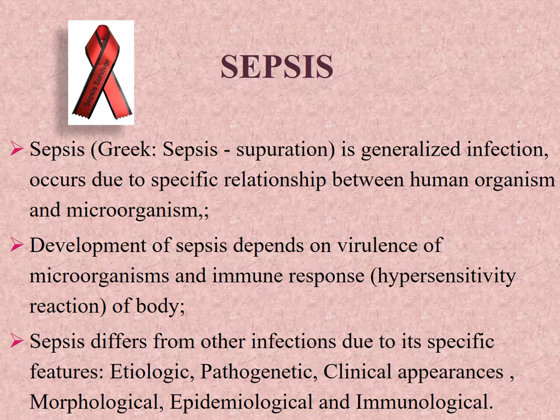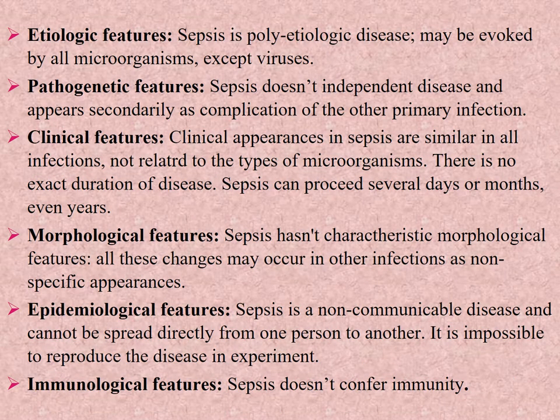Sepsis differs from other infections due to its specific features. Etiological features: sepsis is a polyetiological disease and may be evoked by all microorganisms except viruses. Pathogenic features: sepsis is not an independent disease and appears secondarily as a complication of another primary infection. Clinical features: clinical appearances in sepsis are similar in all infections, not related to the type of microorganism, and there is no exact duration — sepsis can proceed several days, months, or even years. Morphological features: sepsis has no characteristic morphological features; all changes may occur in other infections as non-specific appearances. Epidemiological features: sepsis is a non-communicable disease and cannot be spread directly from person to person. Immunological feature: sepsis does not confer immunity.